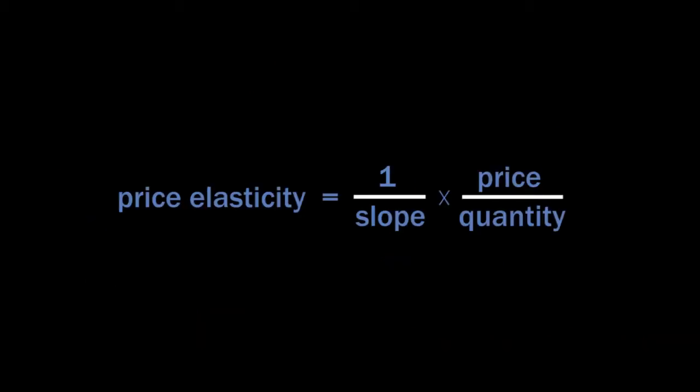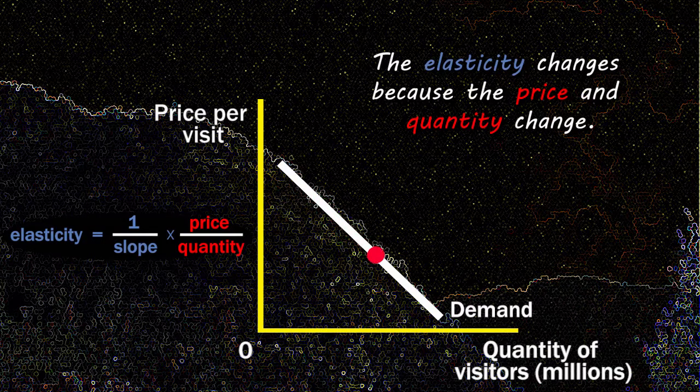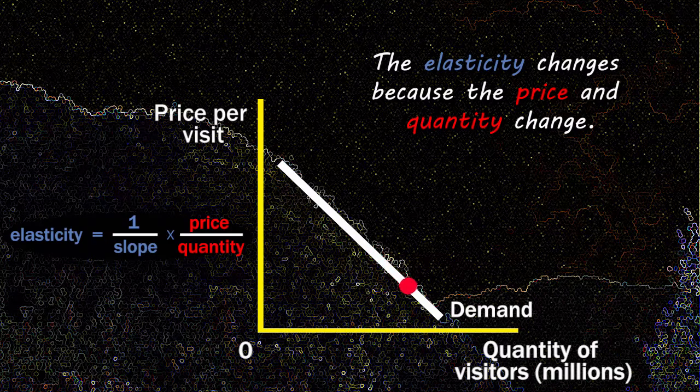The price elasticity formula is equivalent to 1 over the slope times price over quantity. So when the slope rises, the elasticity falls. And as we move up and down along a straight downward sloping demand curve, the elasticity changes because the price and quantity change.